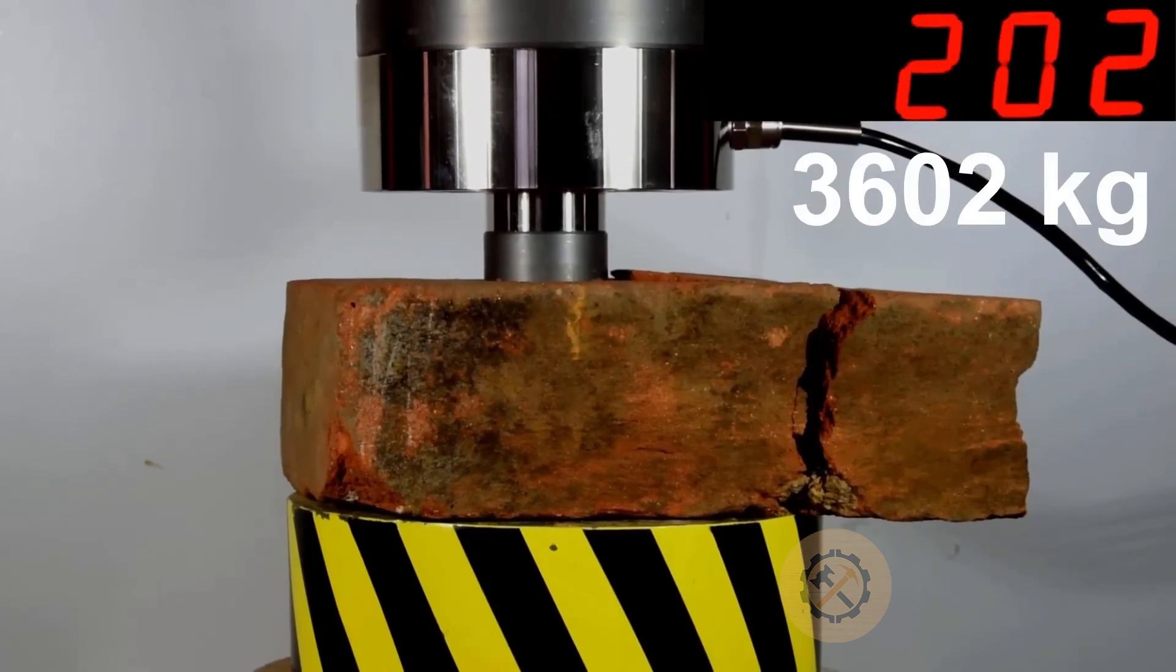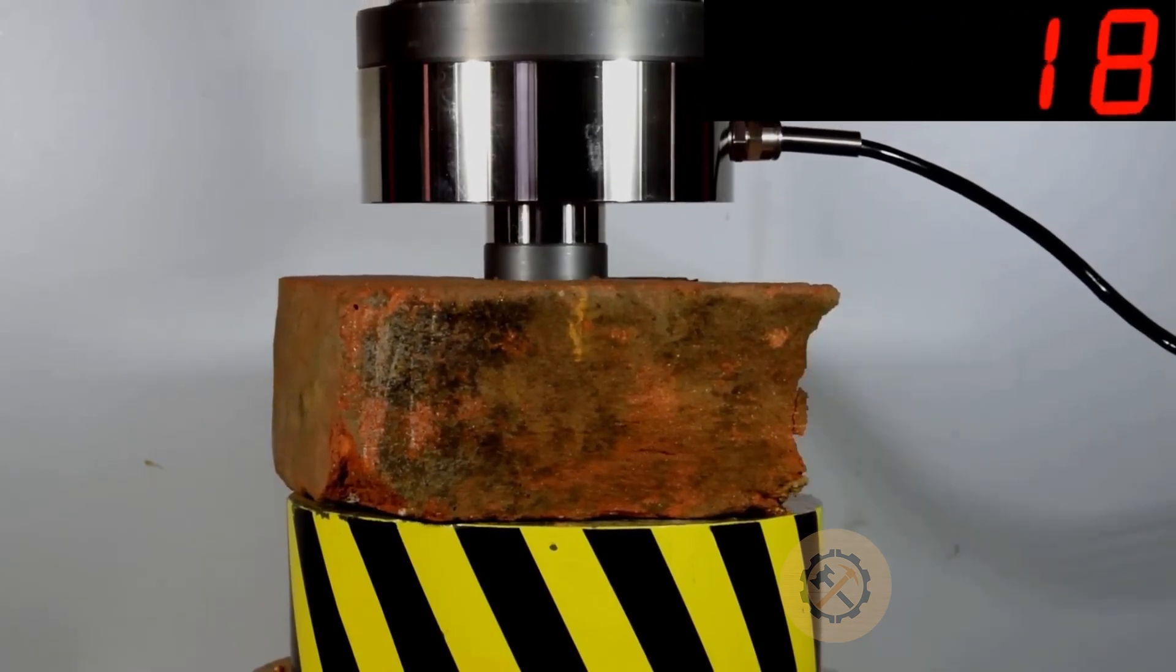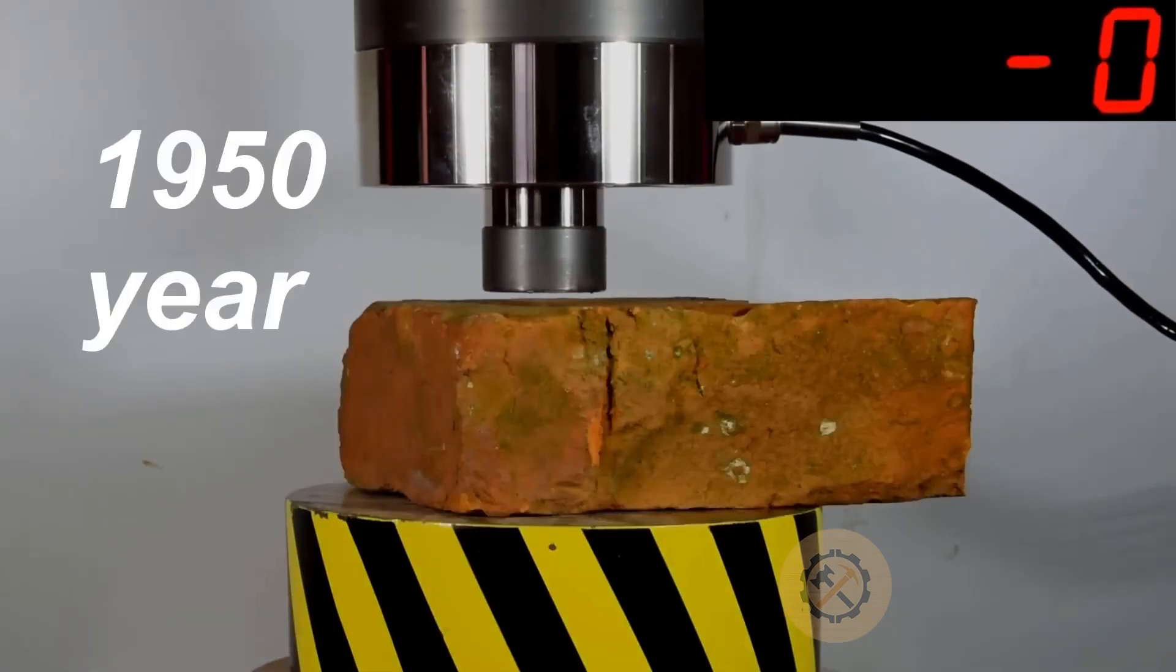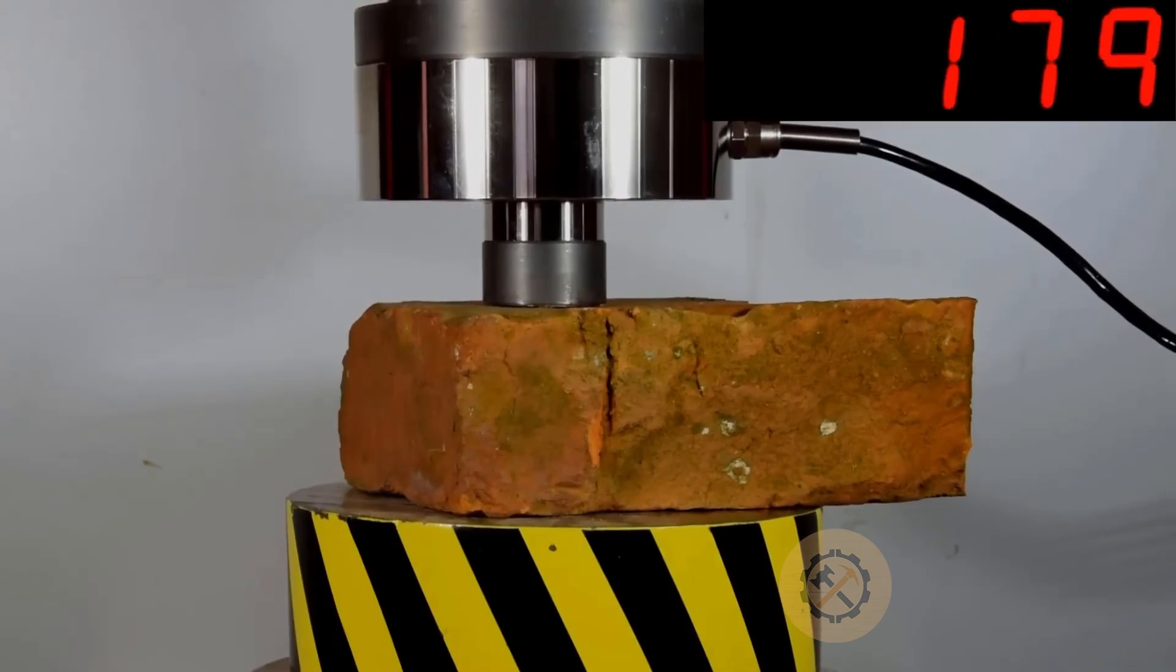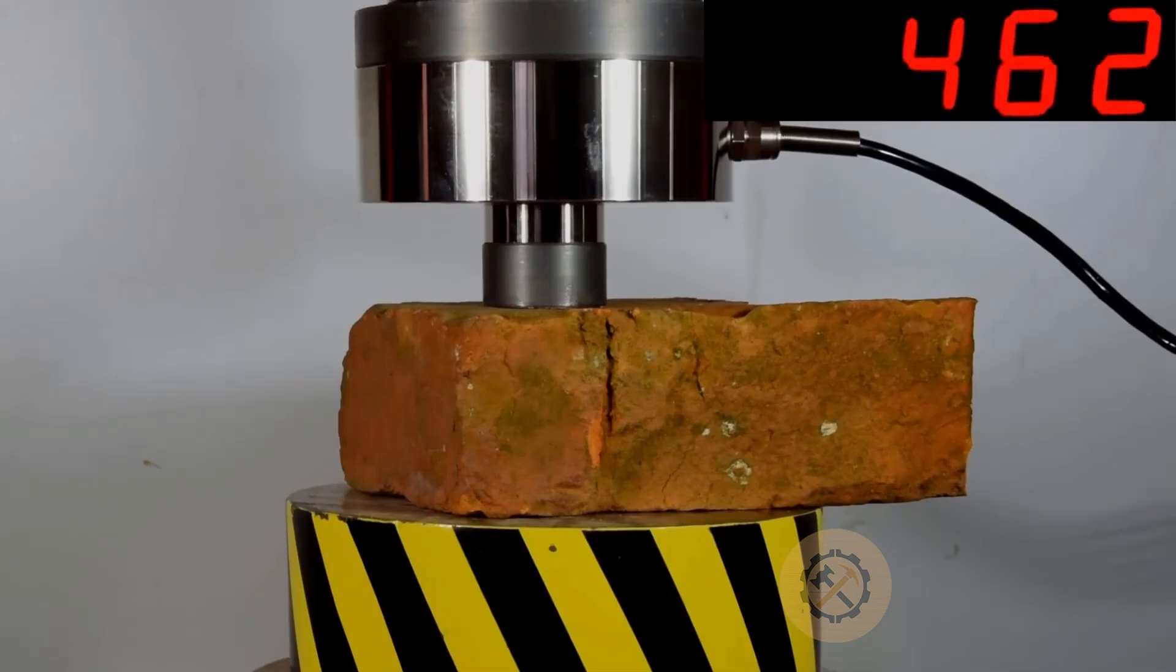We also tested a third brick. This one made in the 1960s. It shattered under just 40 tons of pressure. During that time, construction was often focused on speed and volume.